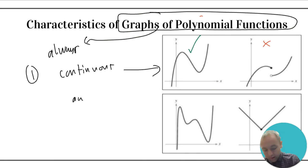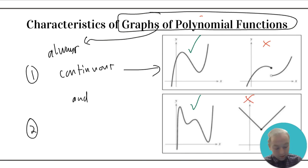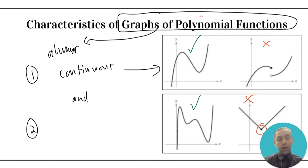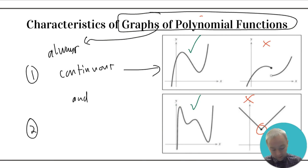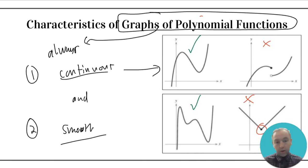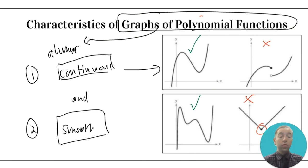Not only that, but the graphs of polynomial functions will always look smooth versus having a sharp turn. Polynomial functions will never have sharp turns like that — they're always going to look smooth, like you're seeing in number two. So these two characteristics, being continuous and smooth, are 100% true about the graph of every single polynomial function you'll ever encounter.